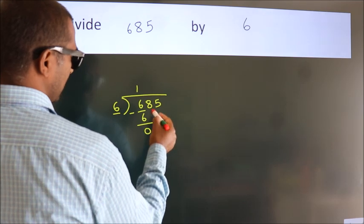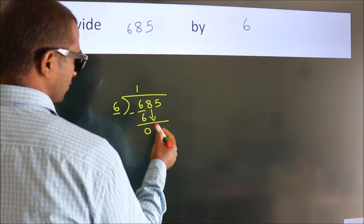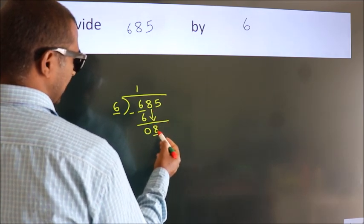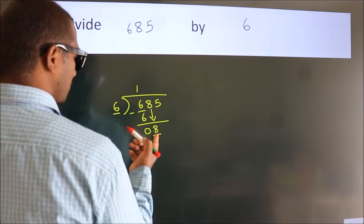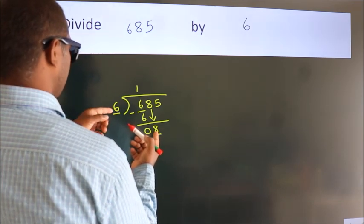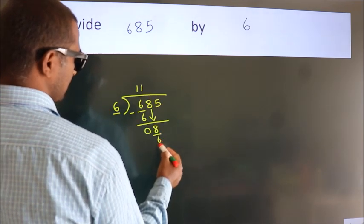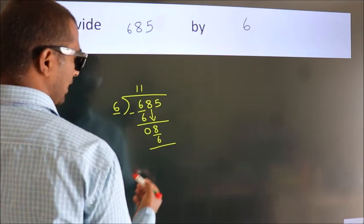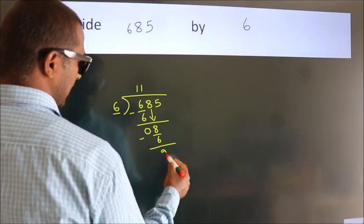After this, bring down the beside number. So 8 down. A number close to 8 in 6 table is 6 once 6. Now we subtract. We get 2.